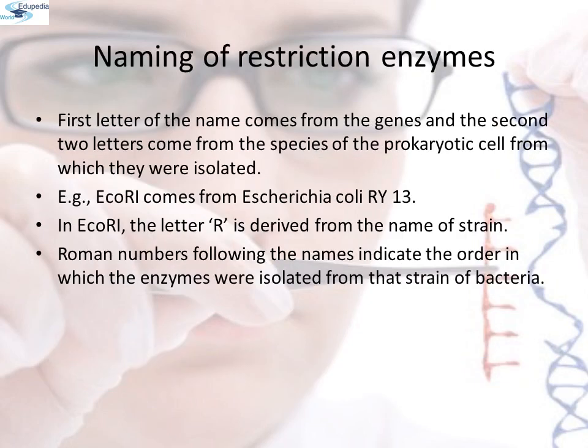Naming of restriction enzymes: the convention for naming these enzymes is that the first letter of the name comes from the genus and the next two letters come from the species of the prokaryotic cell from which they were isolated. For example, EcoRI comes from E. coli RY13. In EcoRI, the letter R is derived from the name of the strain. Roman numerals following the name indicate the order in which the enzymes are isolated from the strain of bacteria.